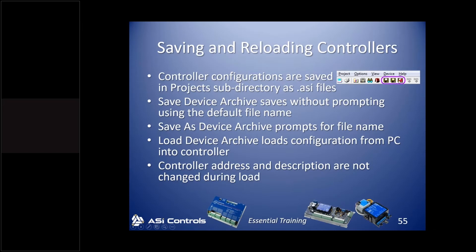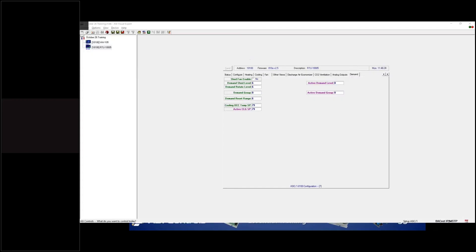Saving means taking a program from the controller and saving it onto your computer. The disk icon with the red arrow is to load a device archive, which means taking a program from the computer and putting it into the controller. When we load a configuration into a controller, some things don't change — including the controller's address, all the BACnet settings, and the description. Those don't get updated intentionally.